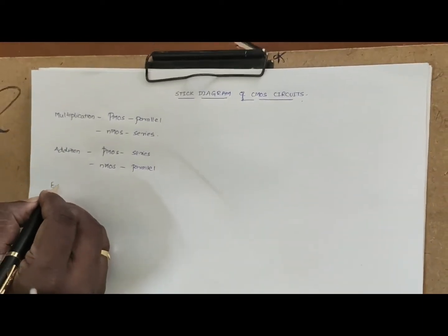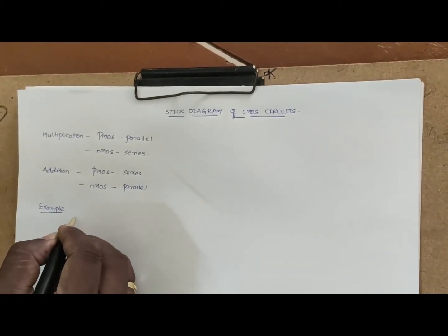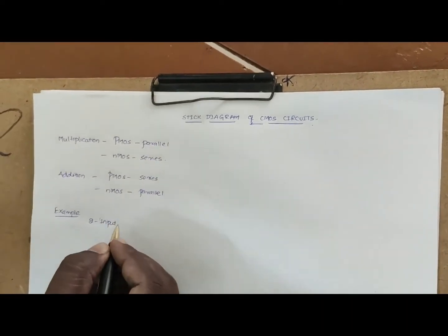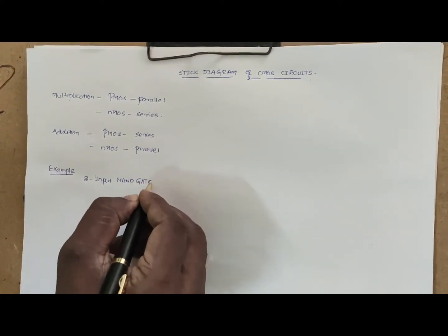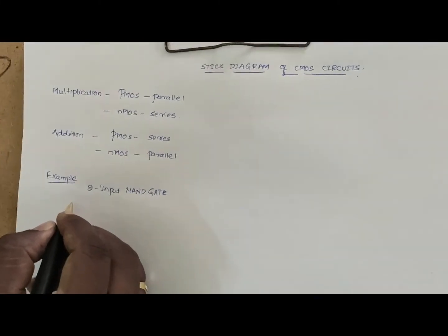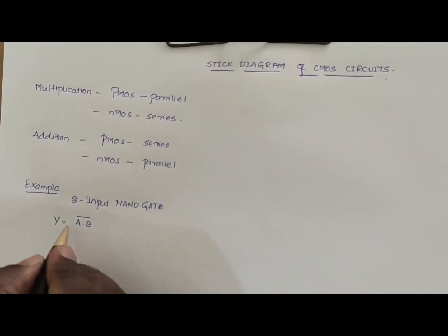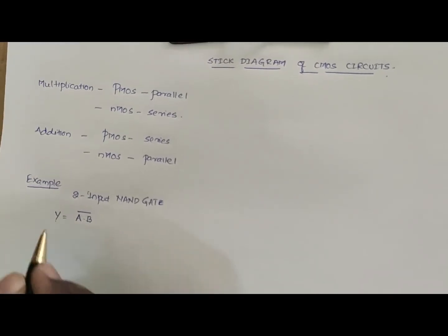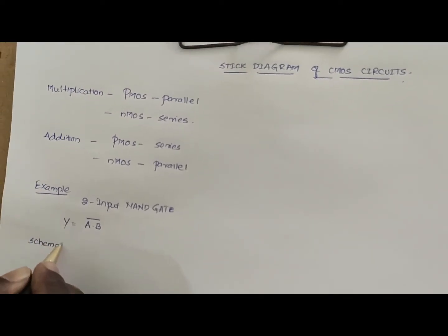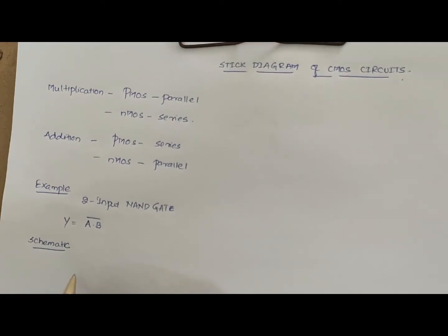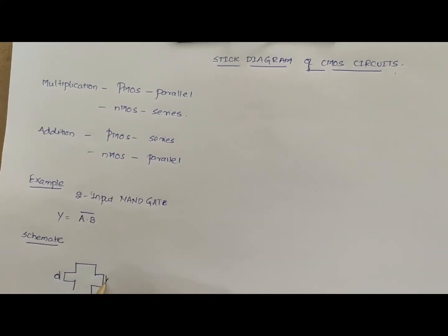So we will take an example to see how a stick diagram is made. The example is a two-input NAND gate.